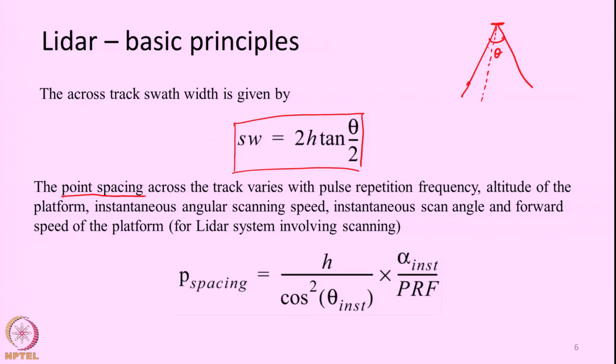The laser beam is a ranging device — for each point at which it hits the ground, we measure the range and effectively calculate the x, y, z coordinate of that point. If we want to measure terrain in a very precise way, we need a large number of points.